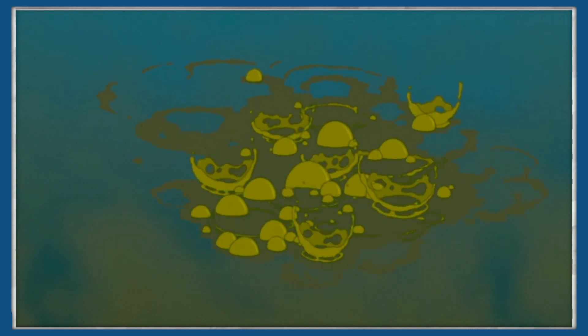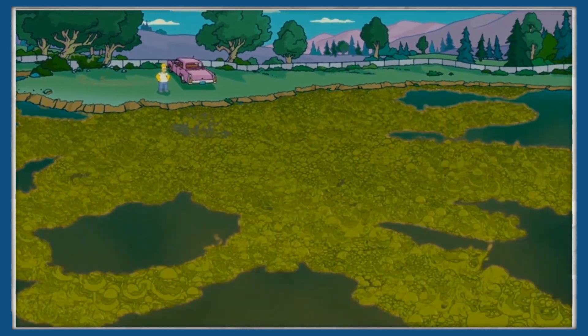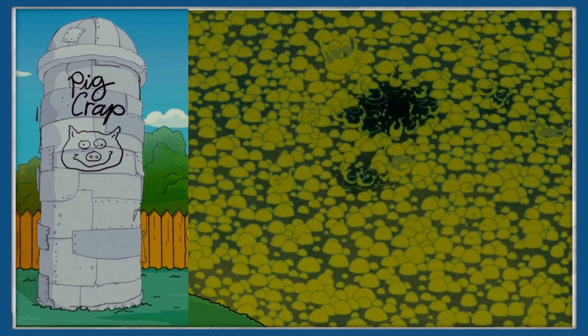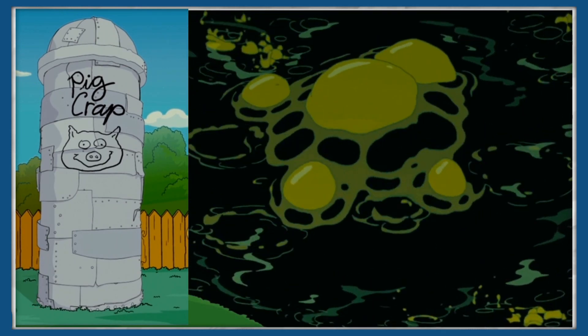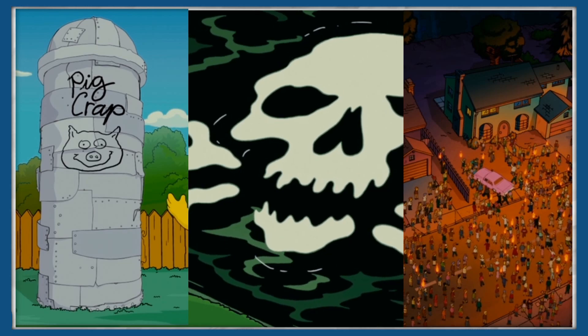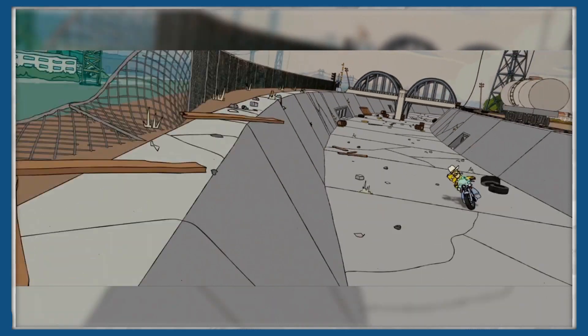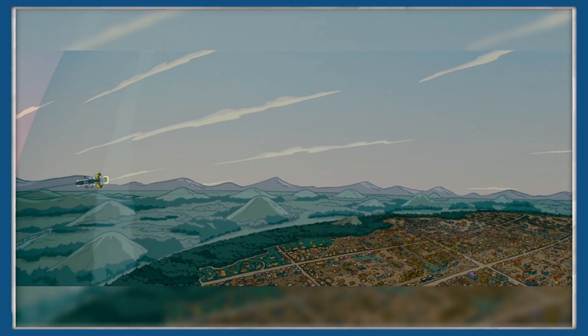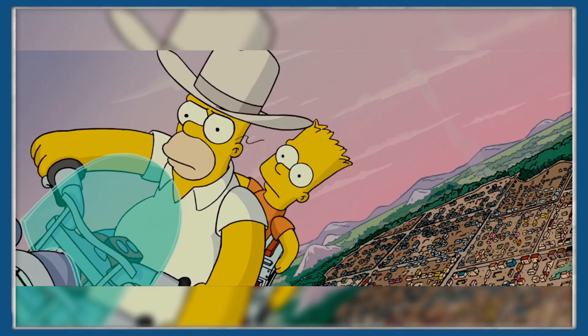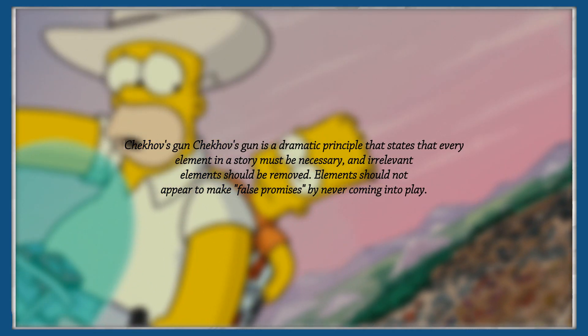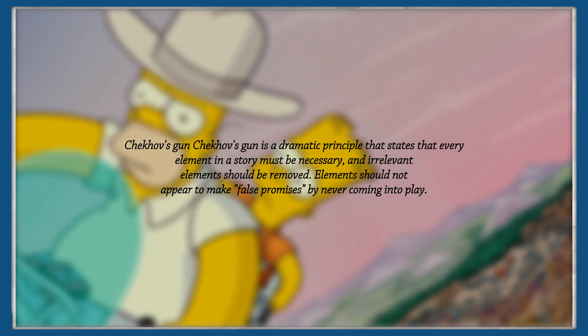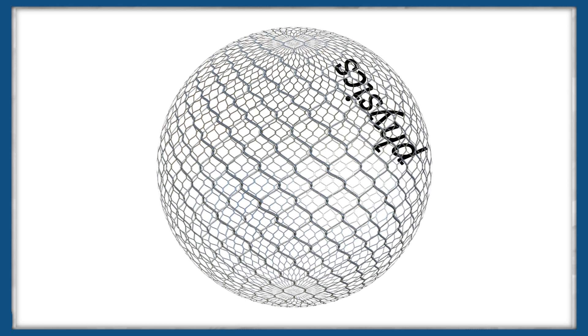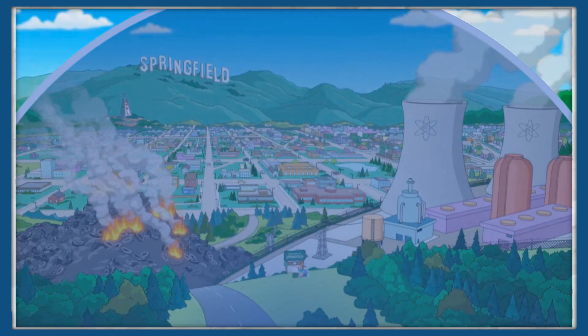There's a lot that we could discuss with this movie — how long the Springfieldians could survive with such high levels of pollution in the dome, whether Plopper could fill up an entire silo in a matter of days, or how many Springfieldians it would take to lift up a car. But today, I'm going to focus on the climax of the film, where Homer has to toss a bomb set to blow up Springfield out of the dome using his Chekhov's gun ability of riding a motorbike around a ball of death earlier in the movie.